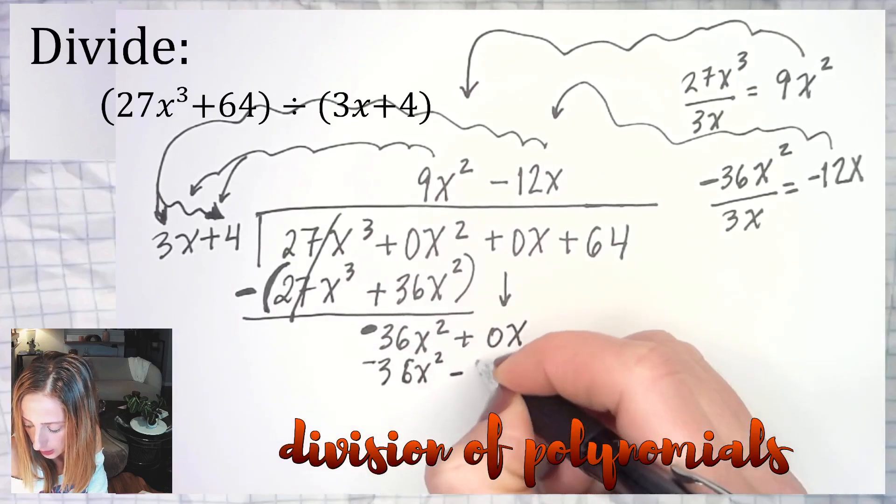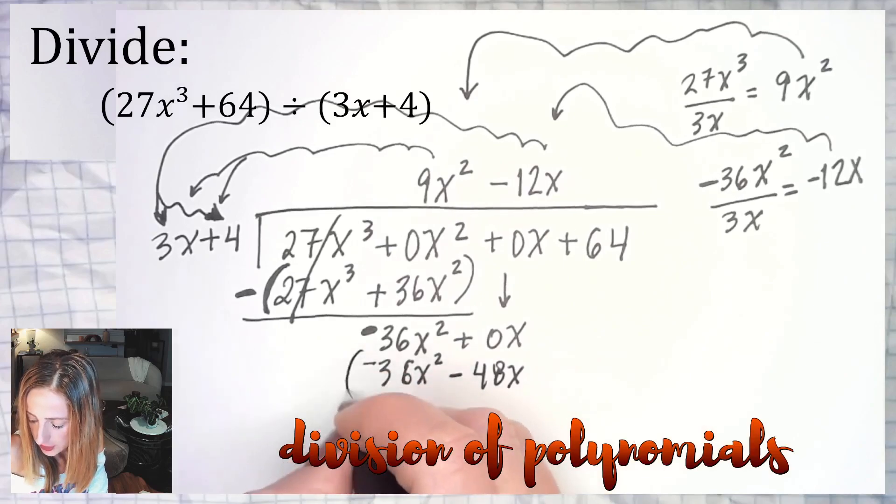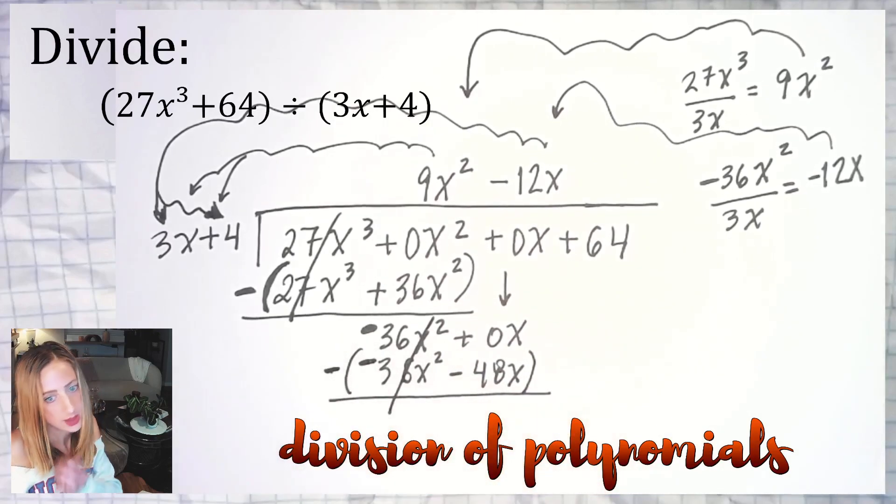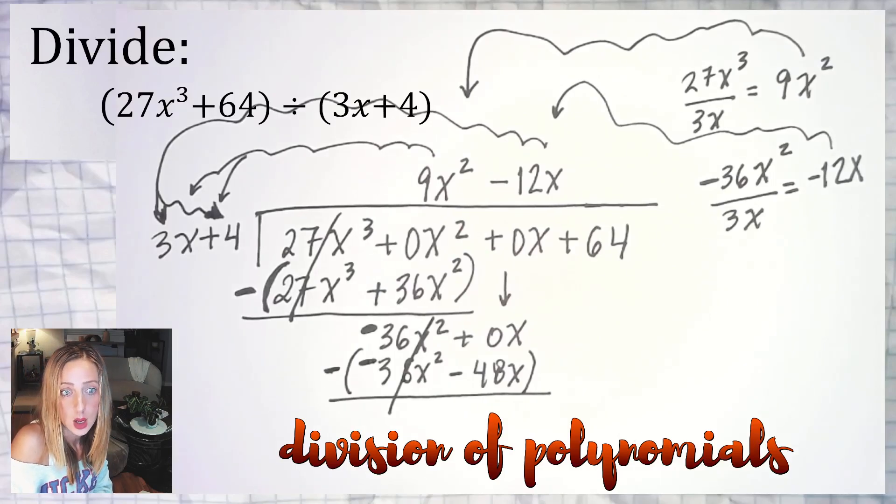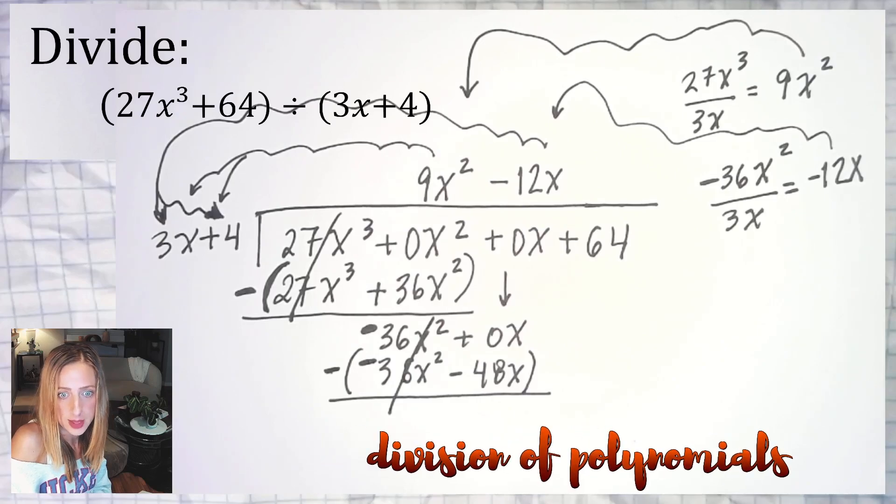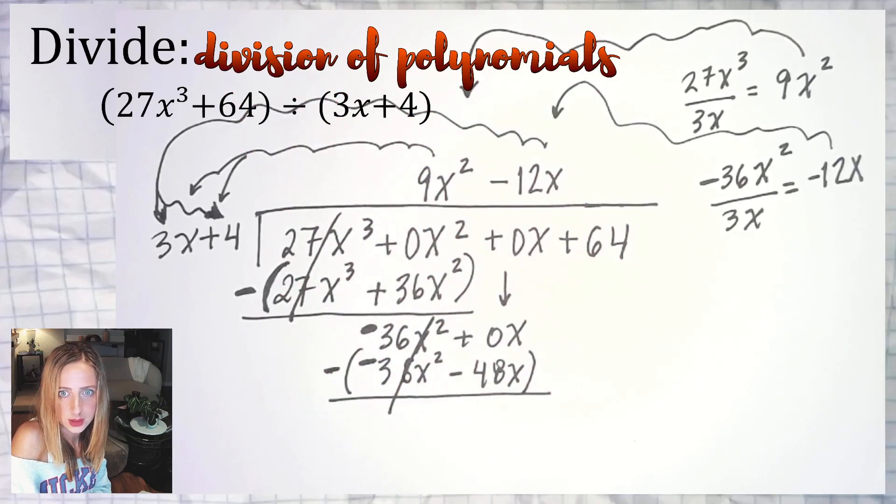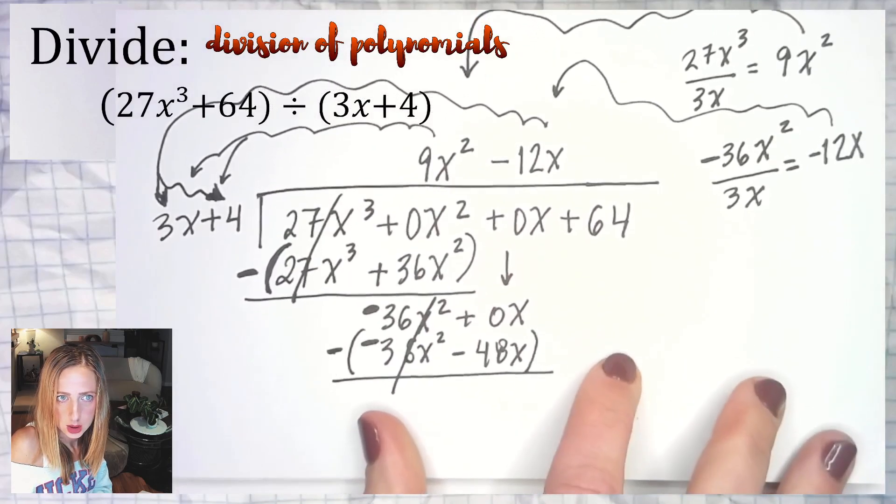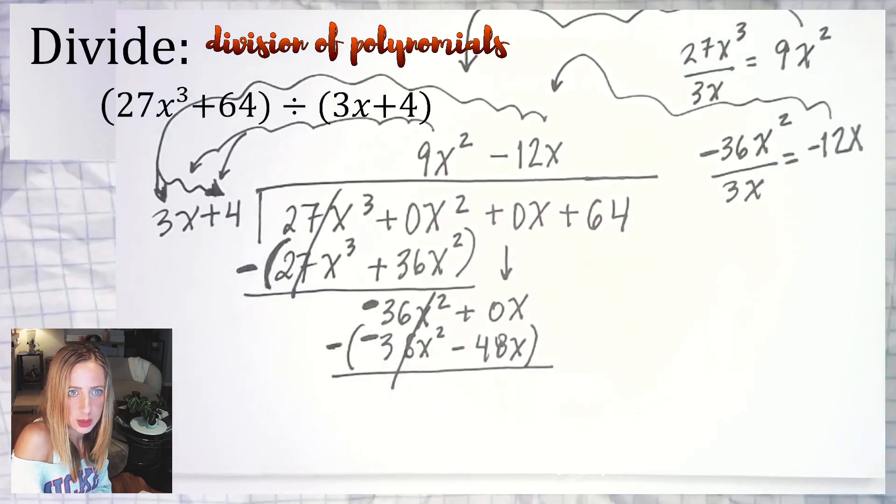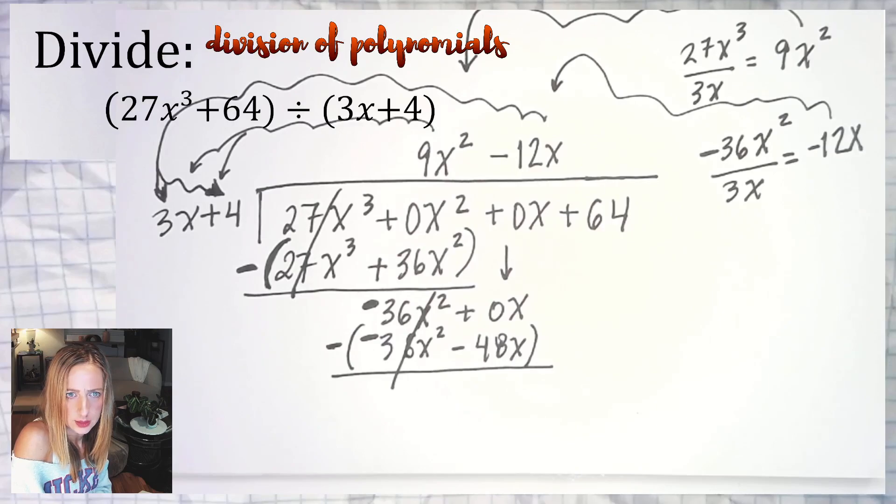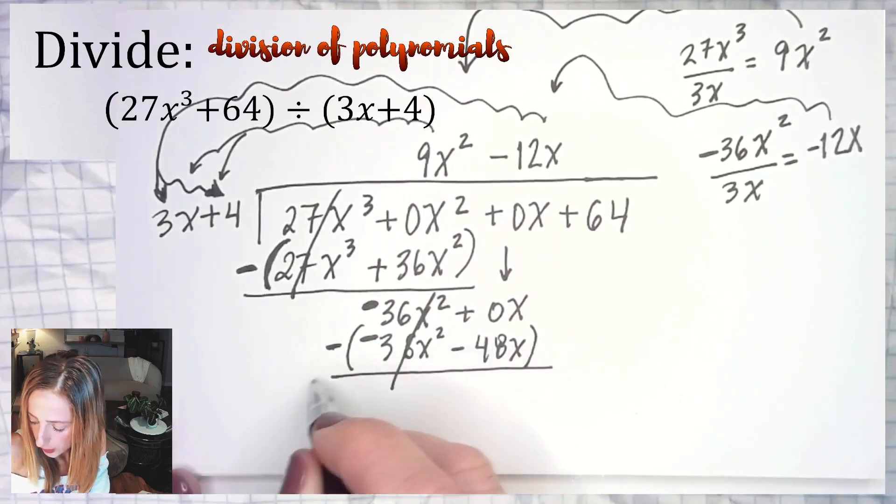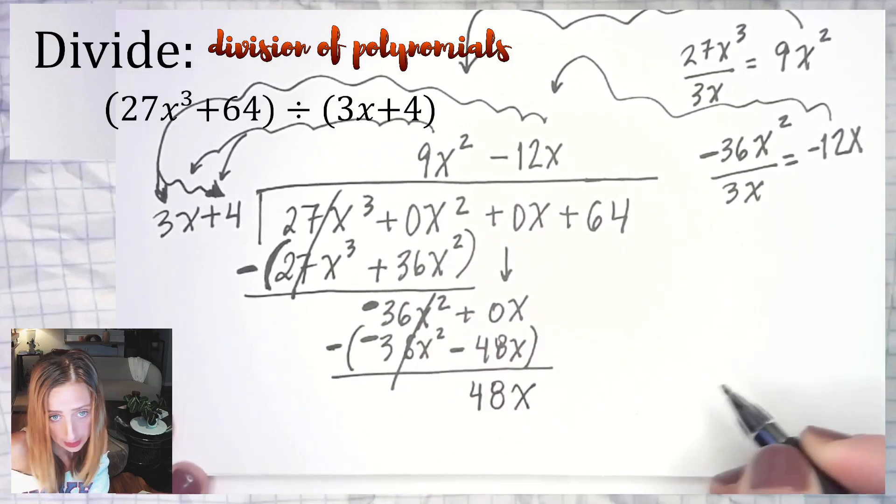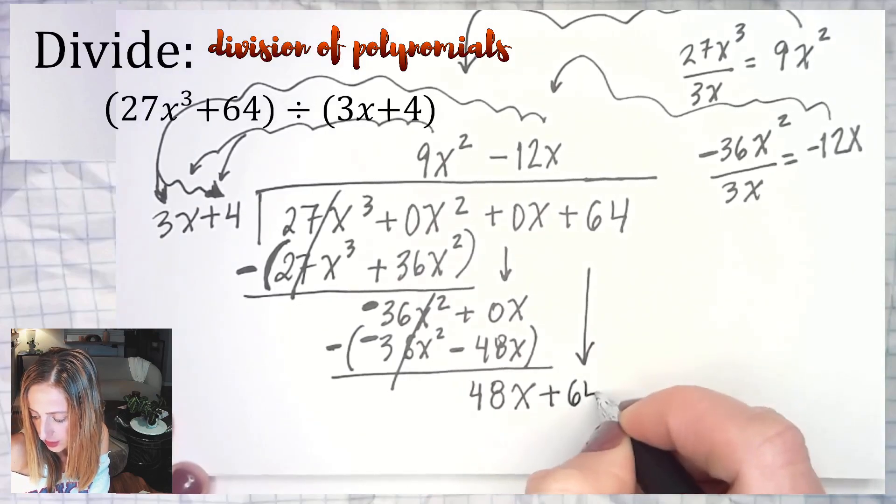Phrase that pays: parentheses, minus sign, underline, cancel. Minus a negative becomes plus, and then -36 plus 36 is 0, so that makes us 0x². What do I have? 0 minus -48 is going to be +48x, and I drop down my next term, +64, and we repeat.